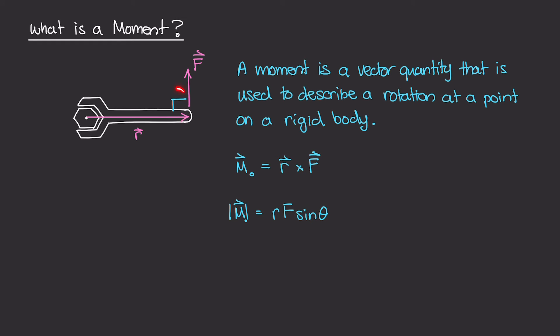Well, the angle between these two vectors is just 90 degrees, and we know that the sine of 90 is 1. So really, the magnitude of this moment is really the value of R times the value of F. That's how we calculate the magnitude of this moment.